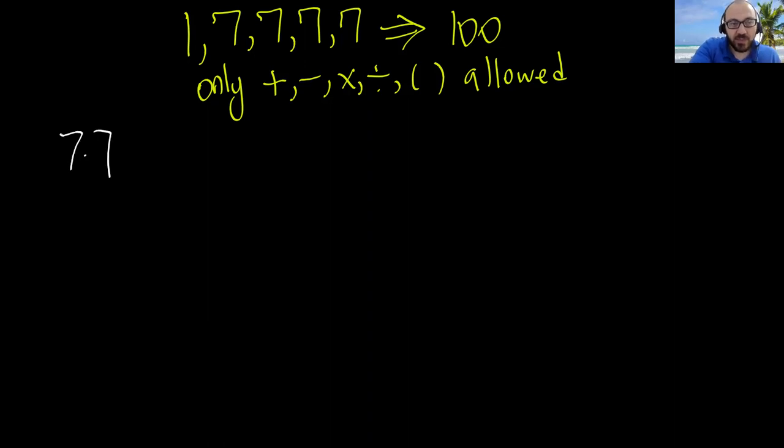So seven times seven is 49. I can add two of those, and a two. Wait, I don't have a two. Two is one plus one, but I have only one one.